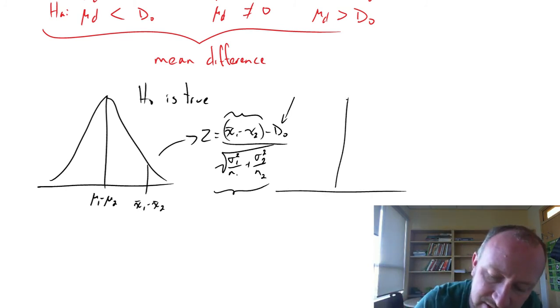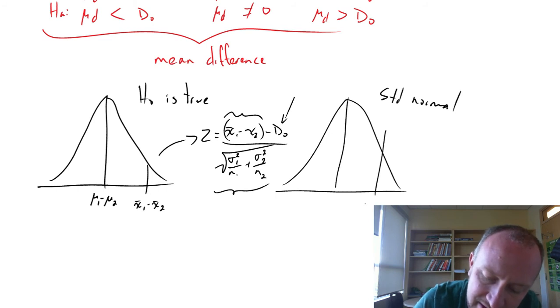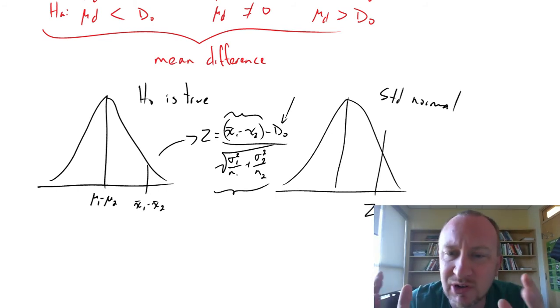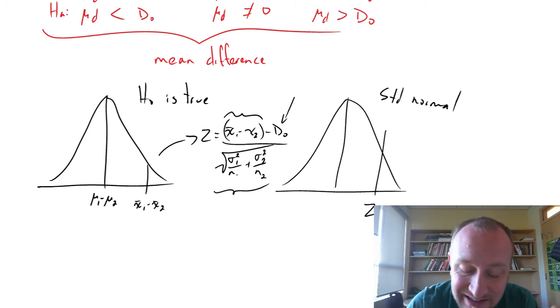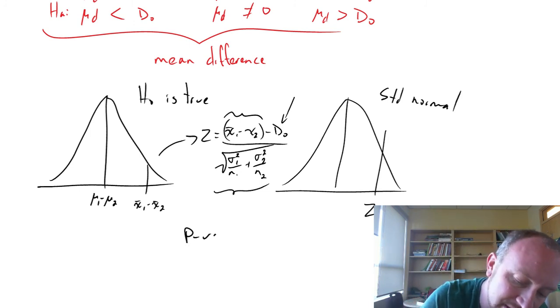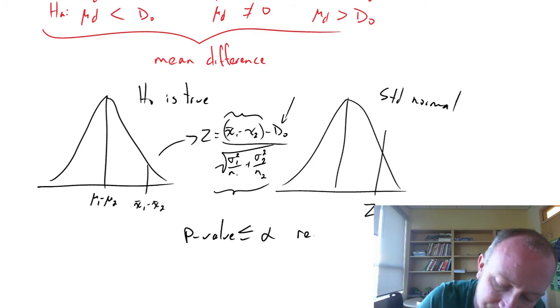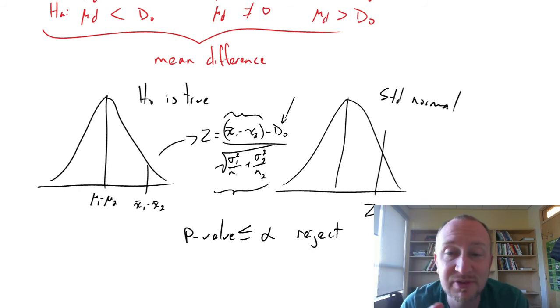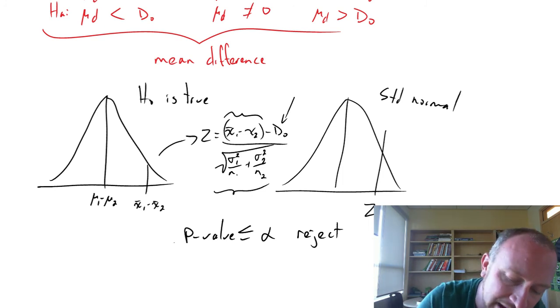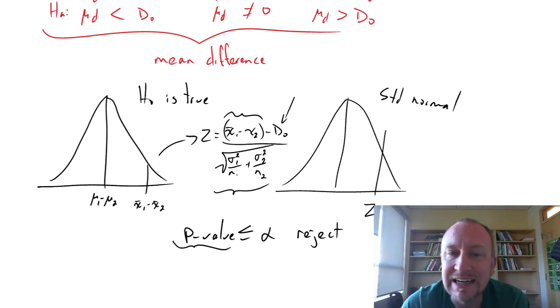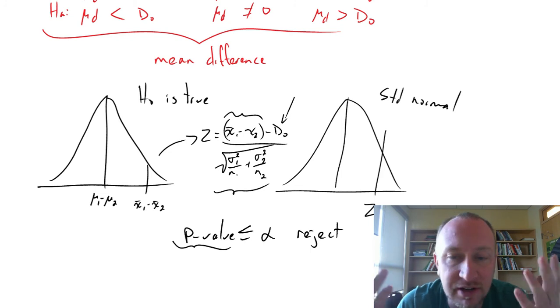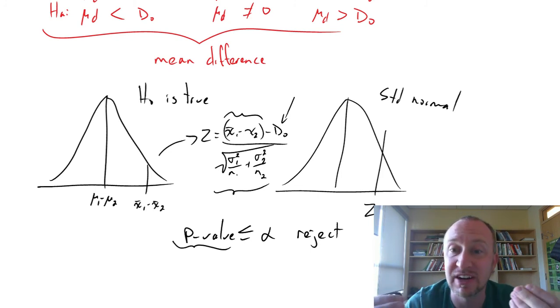And then of course this allows us to compare this to our standard normal distribution, and we'll obtain a Z statistic, and wouldn't you know it, all the rejection rules are going to be exactly the same. So we'll be using the p-value rejection rule, whether or not that's smaller than or equal to alpha, and we'll reject again for the same reasons. It has everything to do with our tolerance towards a type 1 error, and this p-value being that measure of evidence in favor of or against the null hypothesis.